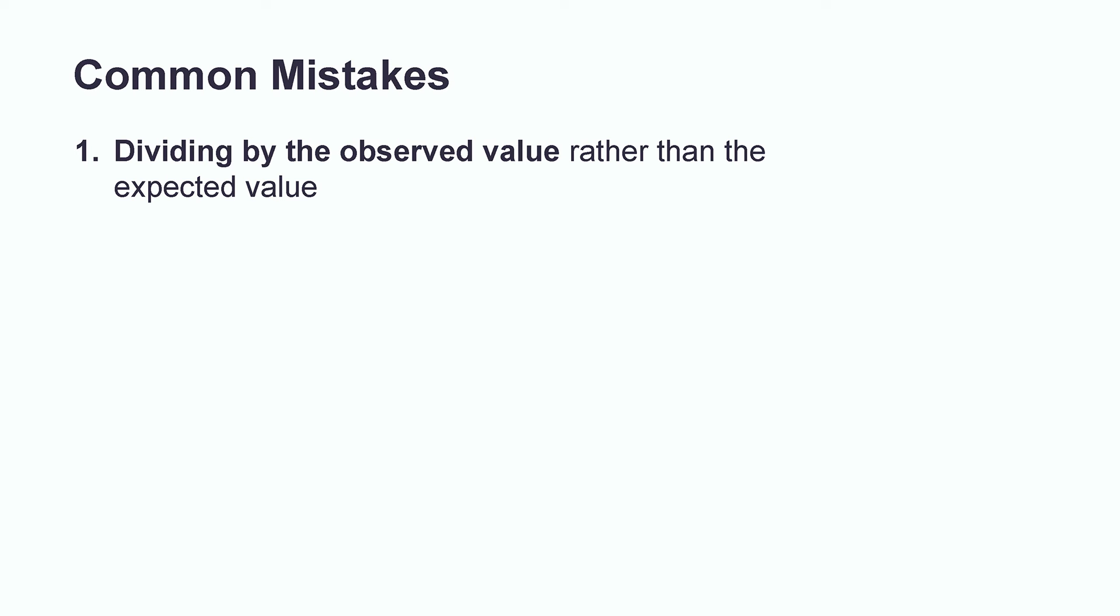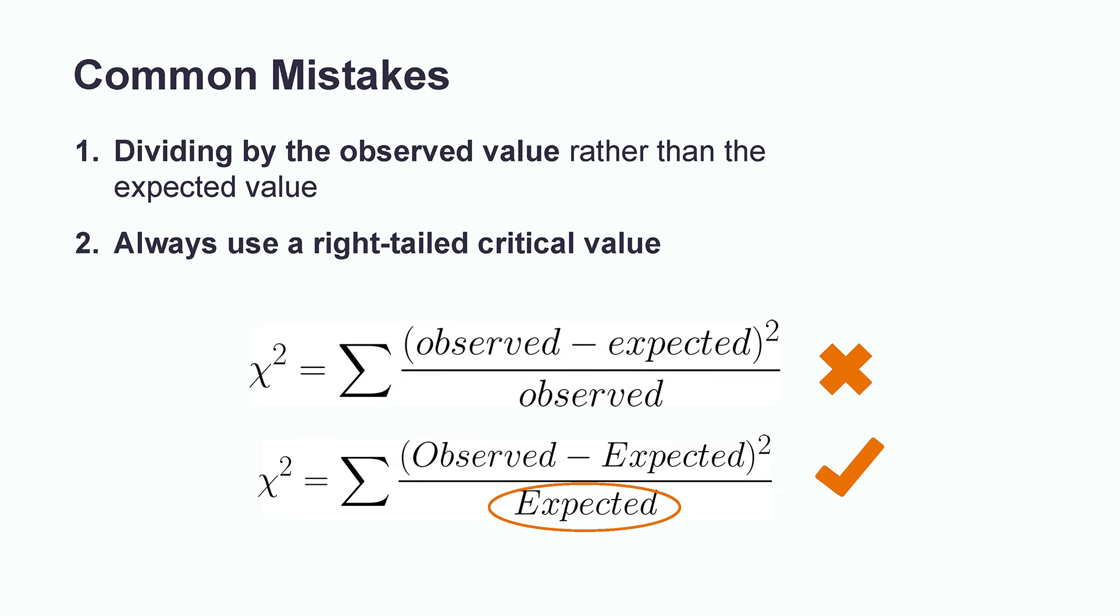Additionally, students should always remember that chi-square tests are right-tailed, although this can be confusing because the alternative hypothesis contains the words not equal.